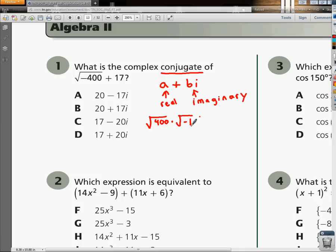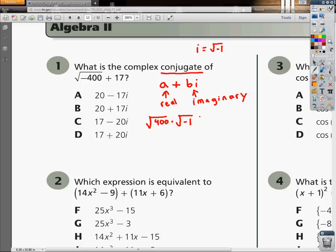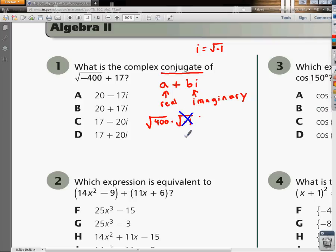If you refer to your reference sheet, it says that I equals the square root of negative 1. So we now know that the square root of negative 1 really is just I. So this portion here is going to now become an I.